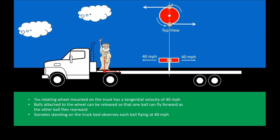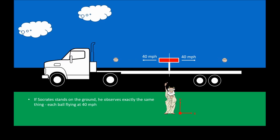We've got a truck that's stationary and my friend Socrates is standing on the truck, so he's stationary. I've also got a rotating disc mounted to the truck, and the disc is rotating with a tangential velocity of 40 miles per hour. Attached to that wheel are two balls. The only force those balls will feel is the centrifugal force as a result of the rotation — that's all. We've got this arranged so that we can release the balls at those points marked X. Socrates will simply see each ball move at 40 miles an hour — one toward him, one away from him.